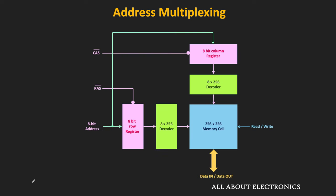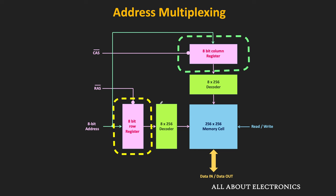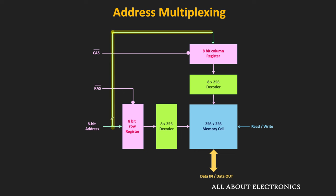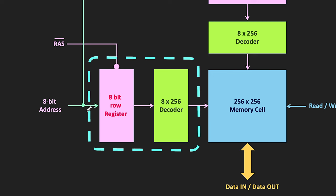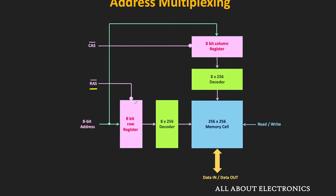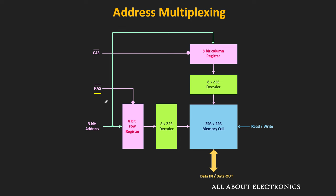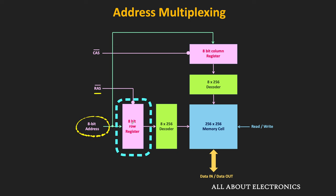For the 64K word memory, two 8-input decoders are used for coincident decoding, each with its own row address and column address register, with the 8 address lines shared between the two registers. There are two control signals: RAS (row address strobe) and CAS (column address strobe). First, the 8-bit row address is applied, and then the RAS signal is activated — since it is active low, it is made low. This enables the 8-bit row register, latching the row address, and the row address decoder selects the specific row.